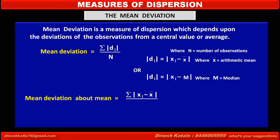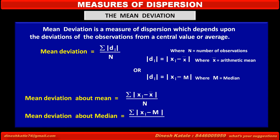Mean deviation about mean is equal to summation of |xi minus x-bar| upon n number of observations. Mean deviation about median is equal to summation of |xi minus m| upon n number of observations.